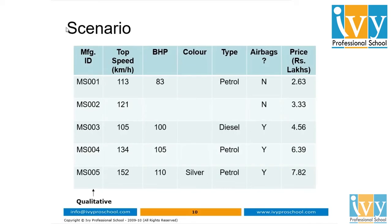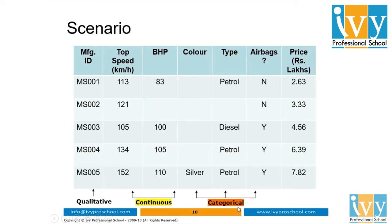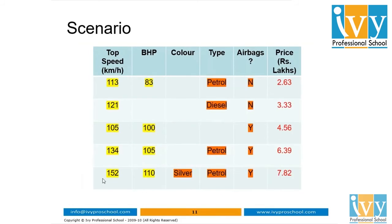Let us classify all these columns. The manufacturing ID is a qualitative column and for a machine learning model it is of no use usually. Top speed and BHP are continuous columns — they contain numbers. The color, type, and airbags columns are categorical because they signify categories like yes or no, or some colors. Since the qualitative column is not useful from a machine learning perspective, we drop that column first.